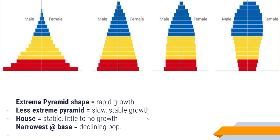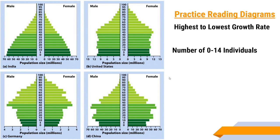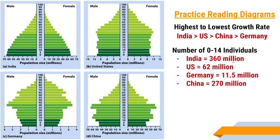We want to look for shape: a wide-base triangle or a triangle in general indicates growth — the wider the base, the more rapid that growth is. More or less vertical bars in the pre-reproductive and reproductive group means stability. If we have basically an upside-down triangle among those two groups — the top always has a different shape as populations get older and individuals start to die — but if our pre-reproductive and reproductive age groups have that upside-down triangle shape, that means we've got a declining population. Looking at the diagrams, the highest growth rate in this example is India, followed by the United States, China, and then Germany, based largely on the proportion of the pre-reproductive ages compared with the reproductive age groups.